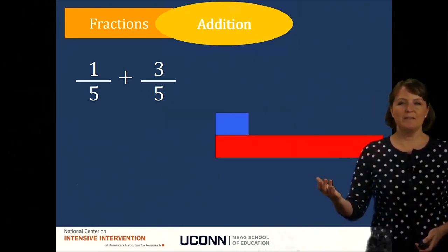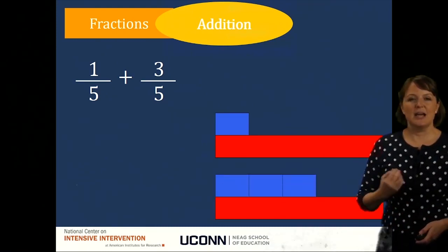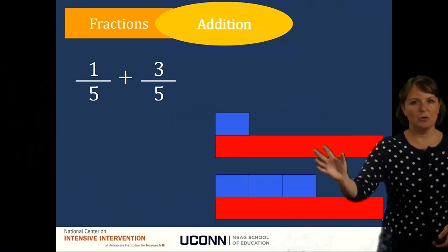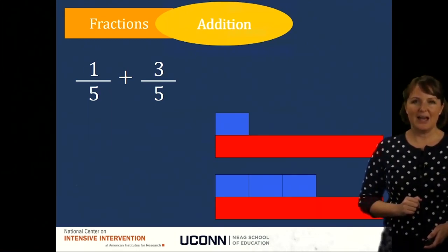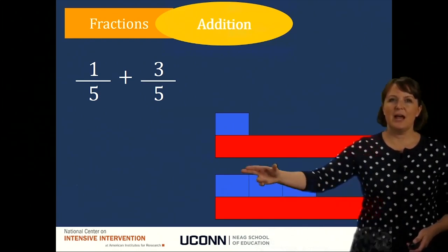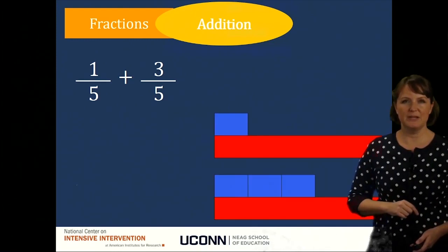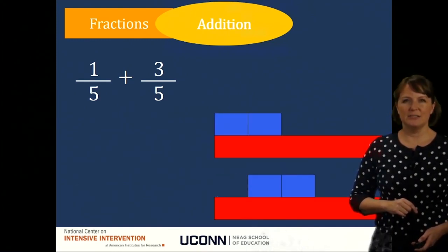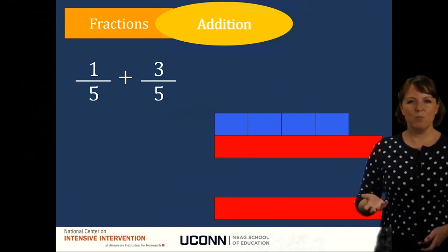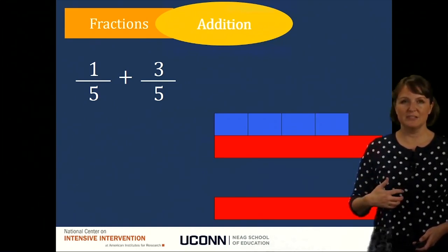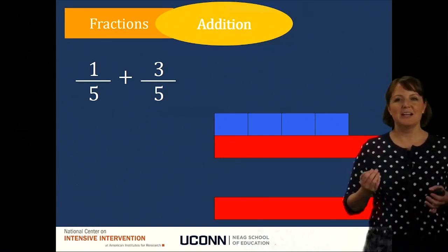Now let's see what this looks like with a pictorial representation. Here I have one-fifth — I've always got my part and my whole. And I want to add to that three-fifths. Notice I show the fraction separately, just like I did with my concrete model. I'm going to add the parts together, taking each of those three one-fifth pieces to my one one-fifth piece. So one-fifth plus three-fifths equals four-fifths.